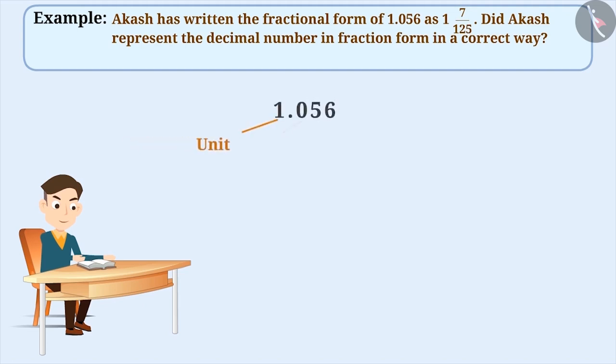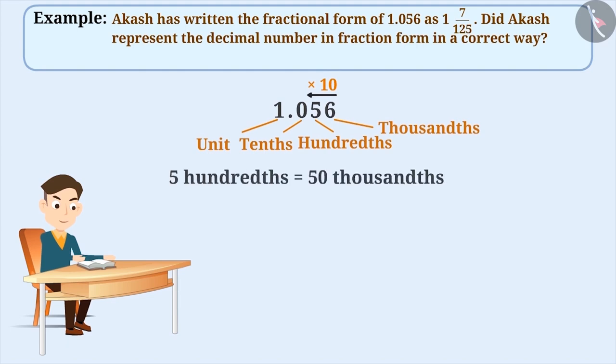There are 1 unit, 0 tenths, 5 hundredths, and 6 thousandths. You already know that the place value of numbers increases by 10 times moving from right to left. Therefore, we can say that 5 hundredths is equal to 50 thousandths.